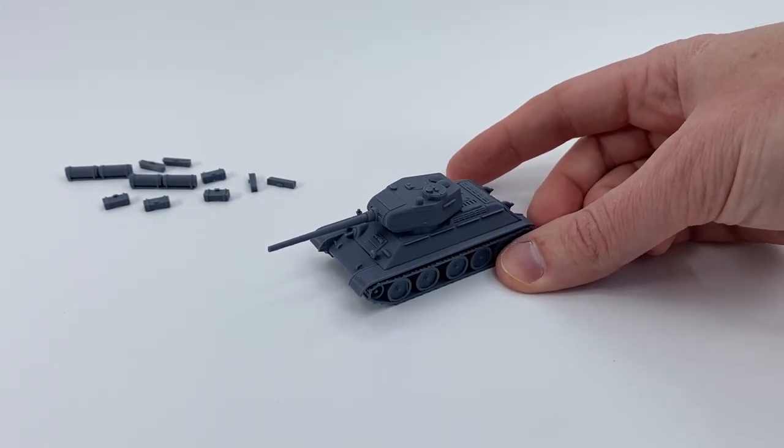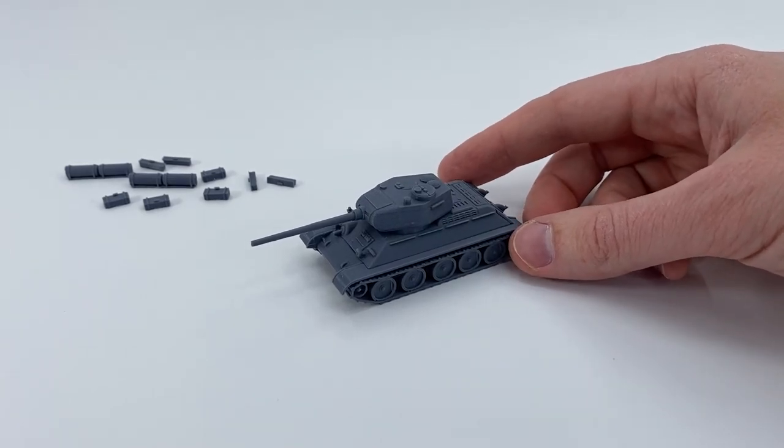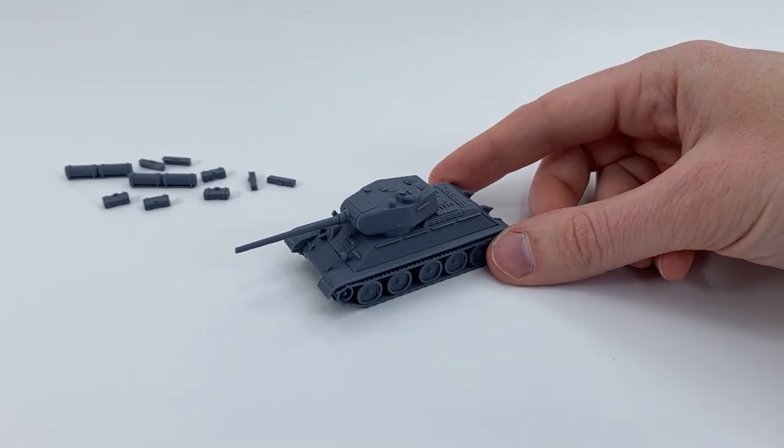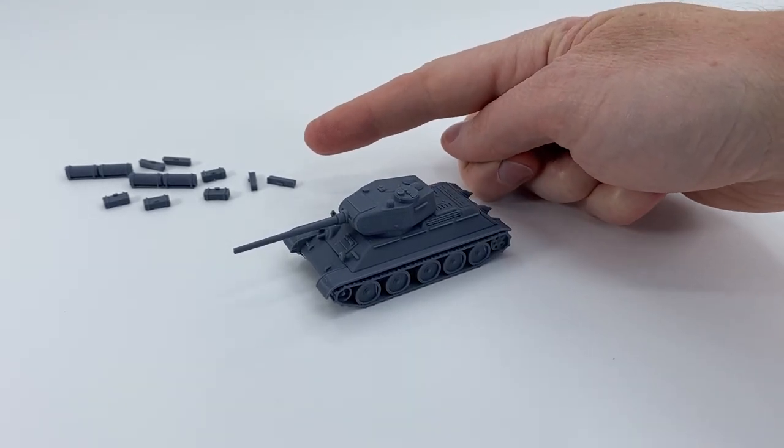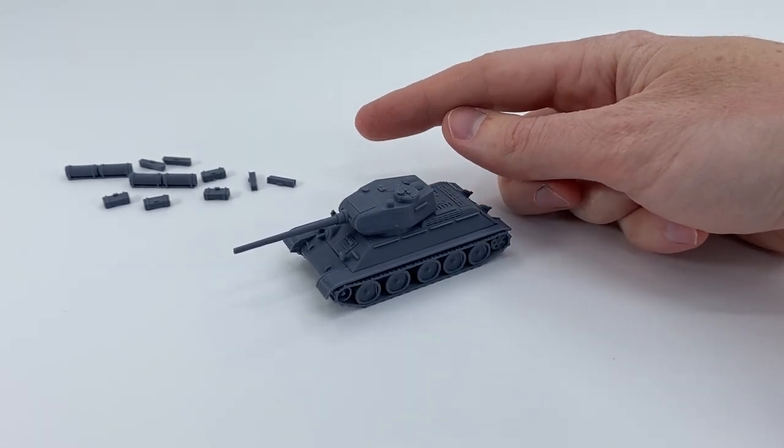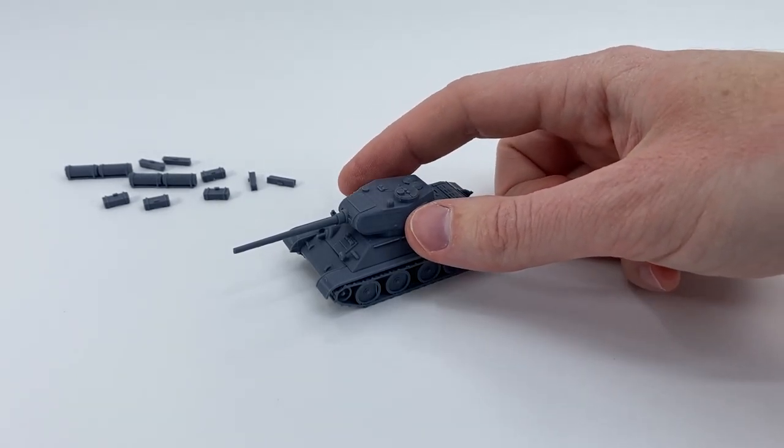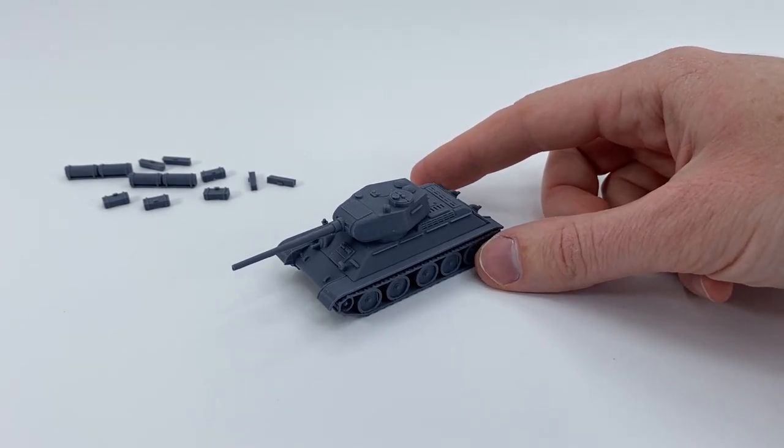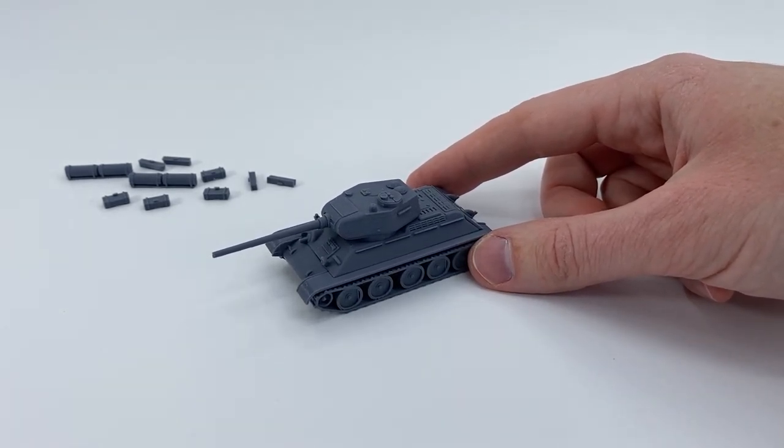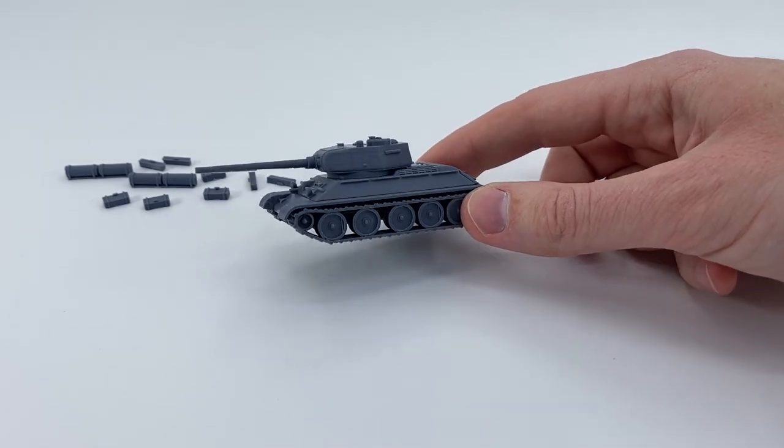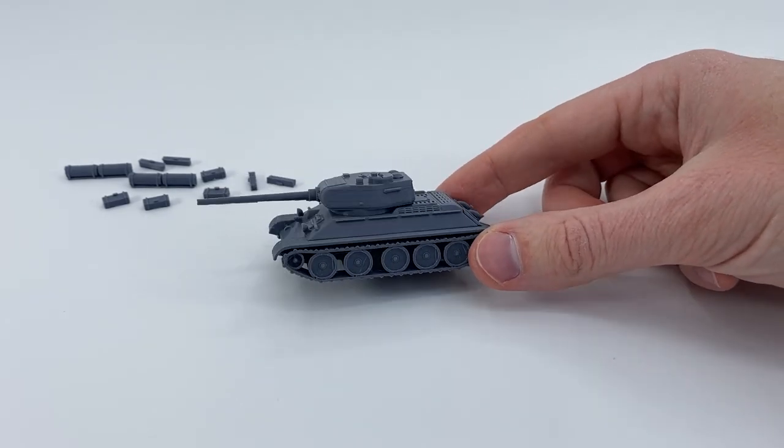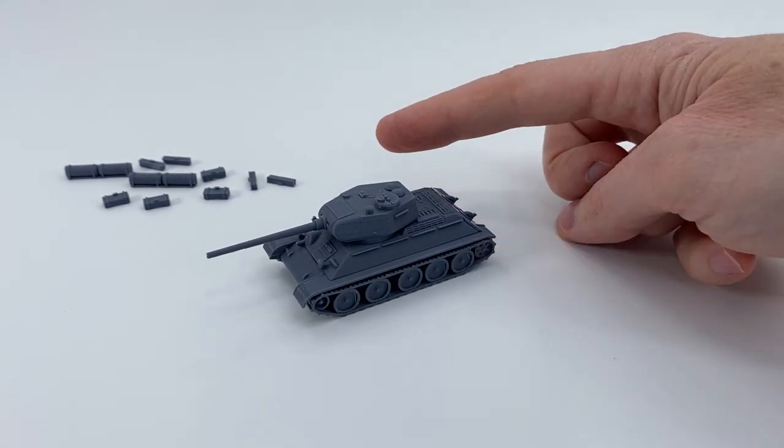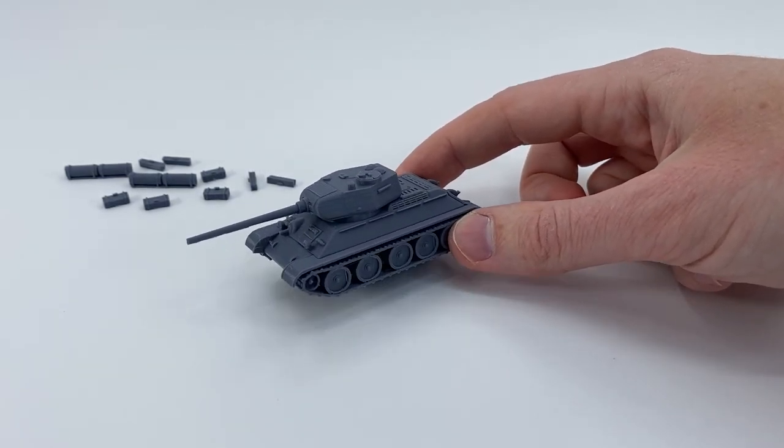This is the completed T-34-85. Of course then you can take all the extra pieces, the jettison tanks, the crates, the bins, whatever, and you can look at historical photographs and glue them on as you wish. The pictures for the listing will have an example. But technically this is done if you just want a bare bones basic version of this tank without all those extra stowage pack stuff.